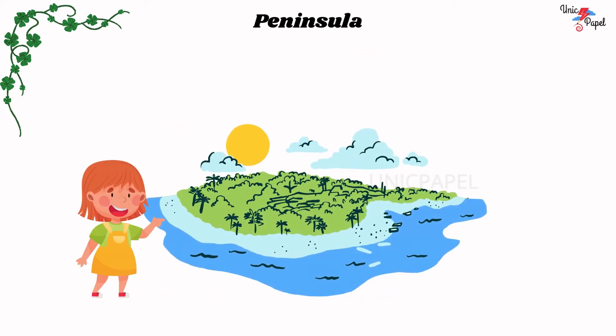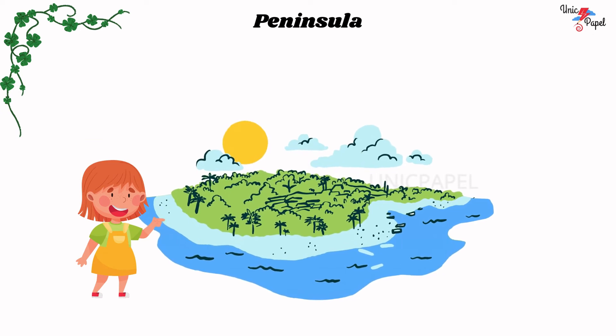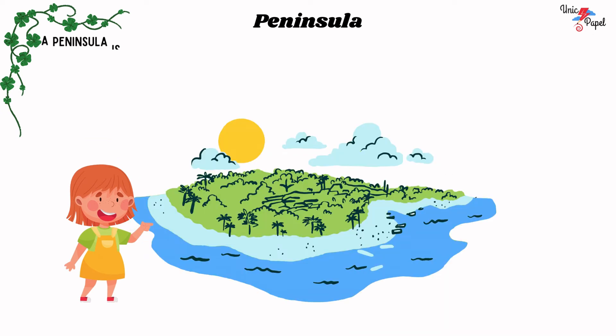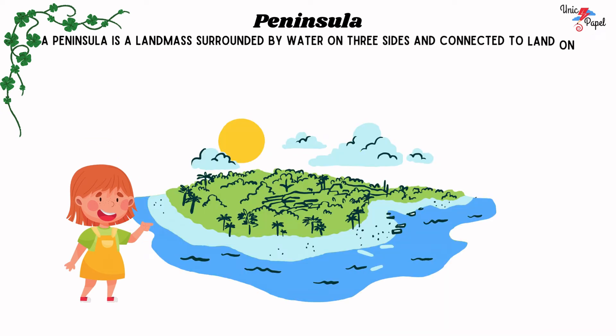Peninsula: A peninsula is a landmass surrounded by water on three sides and connected to land on one side.